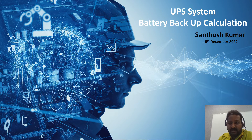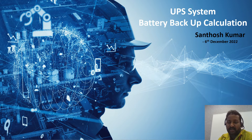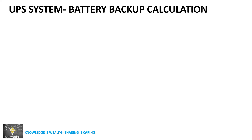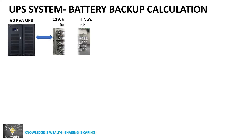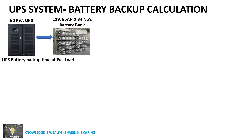Hello friends, welcome to my YouTube channel. I'm Santosh Kumar. Today we're going to discuss UPS system battery backup calculations. Let's take one example of a 60 kVA UPS system which is connected to a battery bank of 65 Ah capacity, 34 numbers, connected to the 60 kVA UPS.